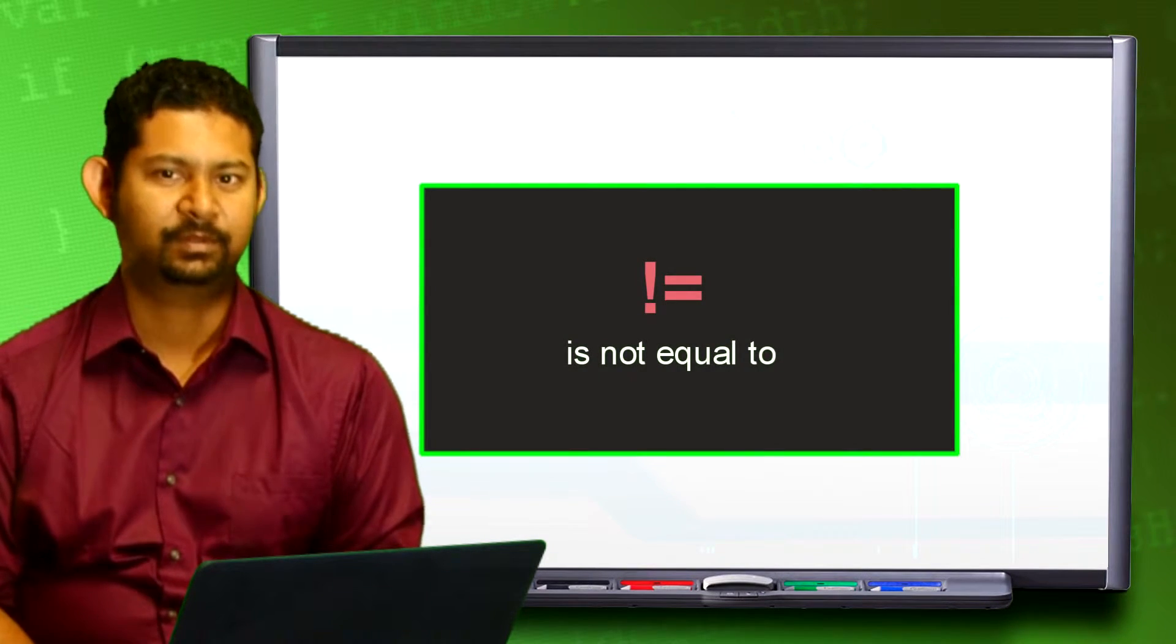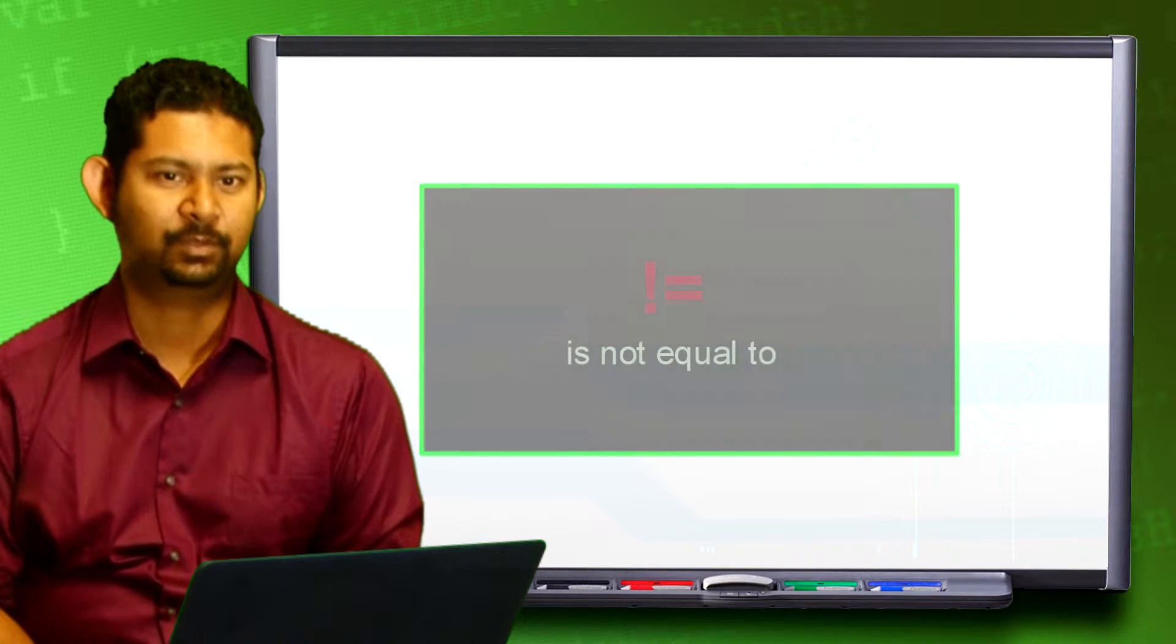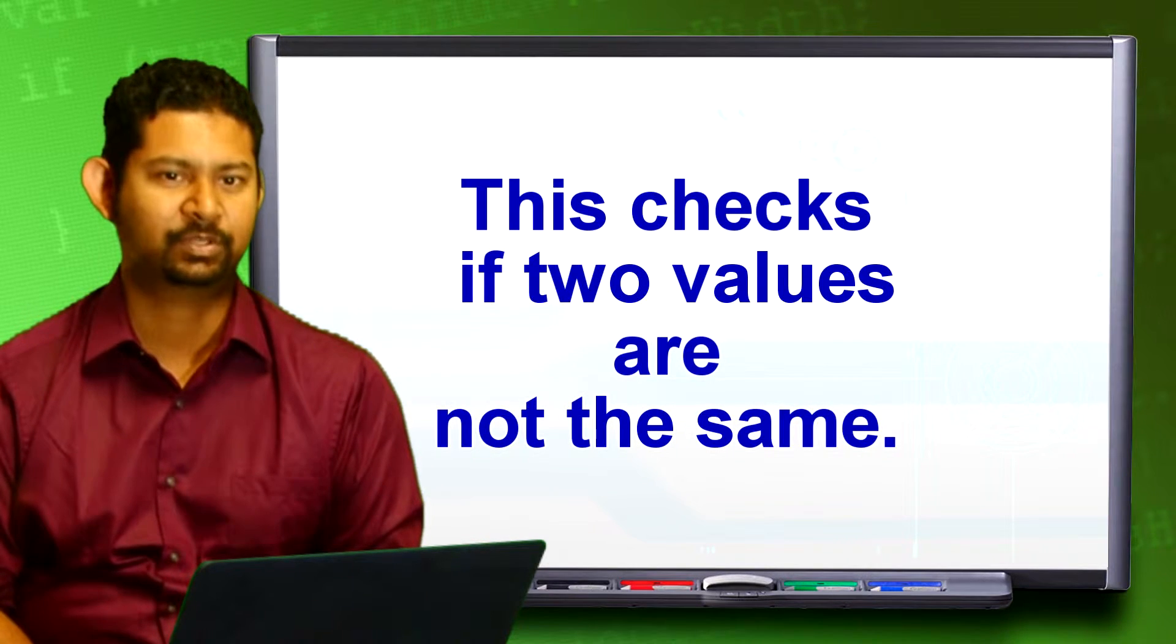Exclamation point equal. This is not equal to. This checks that two values are not the same.